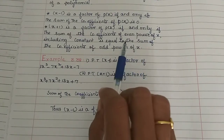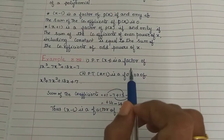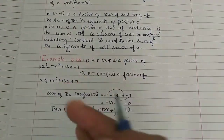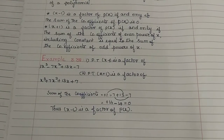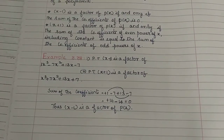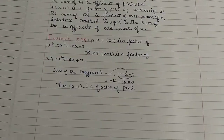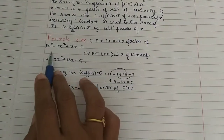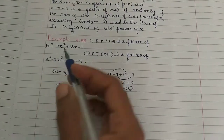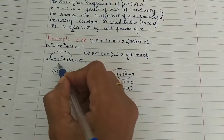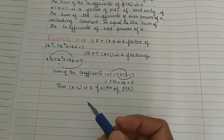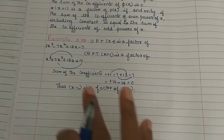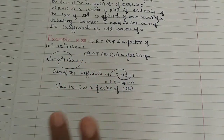So, for even powers and odd powers of x: we add the even-power coefficients and the odd-power coefficients separately. After adding, if the two sums are equal, then x plus 1 is a factor of the given polynomial.